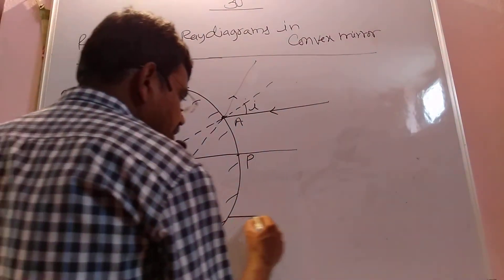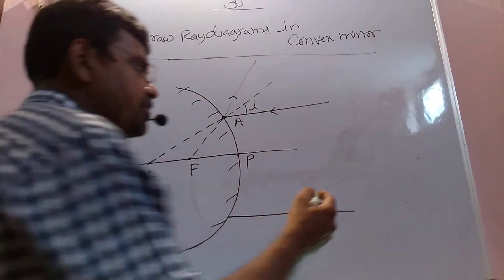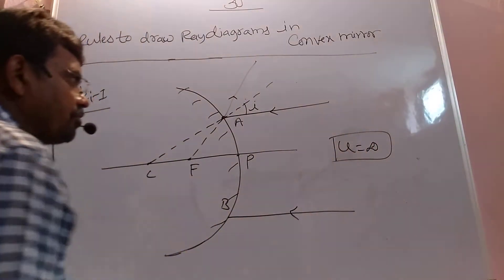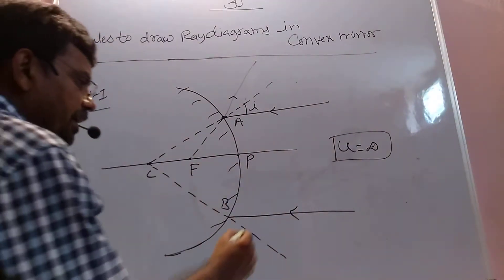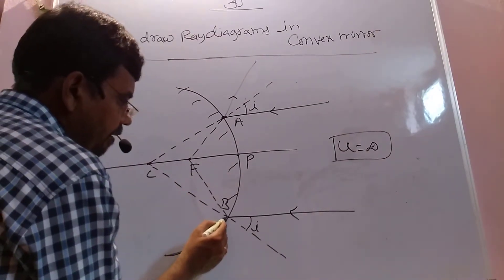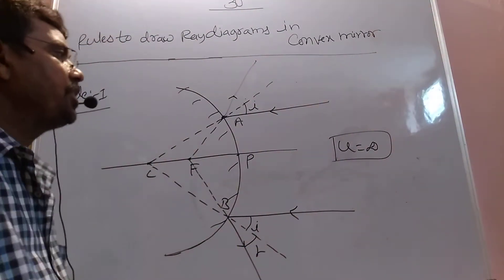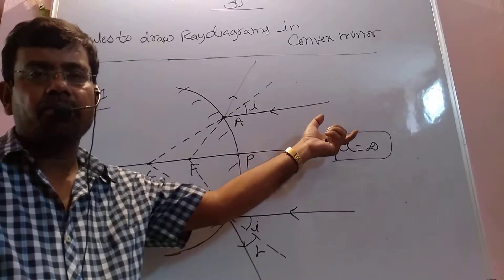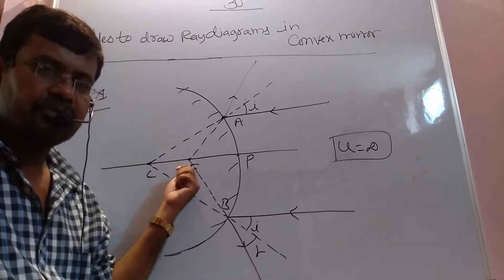Similarly, if you take another parallel beam of light — the object is at a long distance, so U equals infinity — this beam of light is incident at point B. Again, I am joining it to the center of curvature, so this is my normal. Angle of incidence equals angle of reflection, so this is my reflected ray.